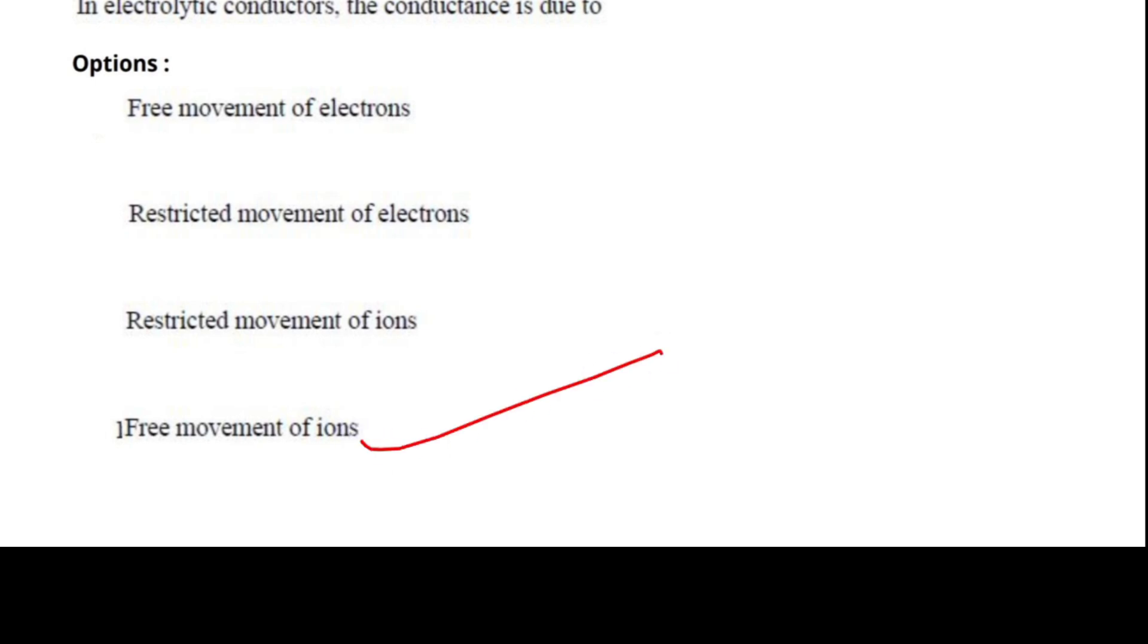In electrolytic conductors, the conductance is due to: free movement of electrons, restricted movement of electrons, restricted movement of ions, free movement of ions. Everyone thinks that the answer would be the free movement of electrons, but the answer is free movement of ions. Option four is correct. First you have to see that in electrolytic conductors, the conductance is due to free movement of ions.